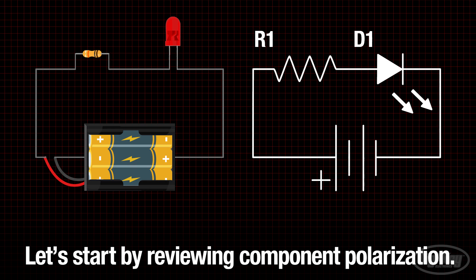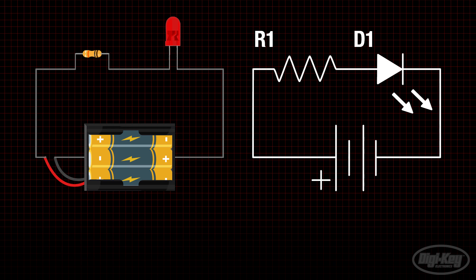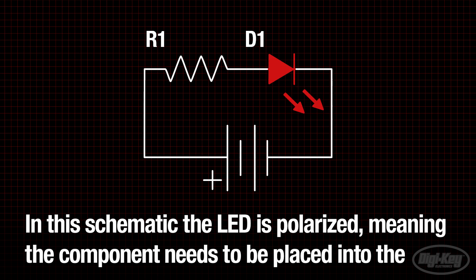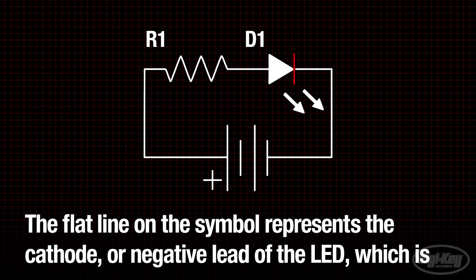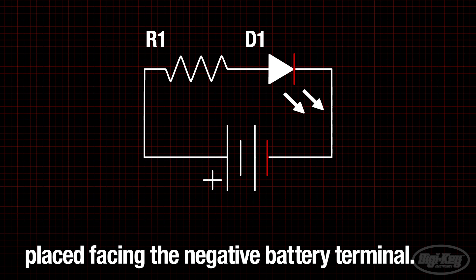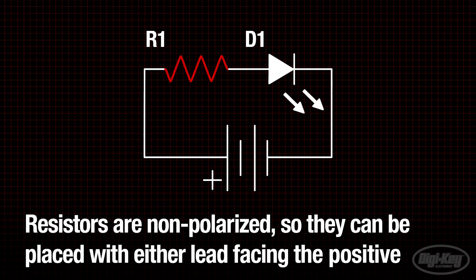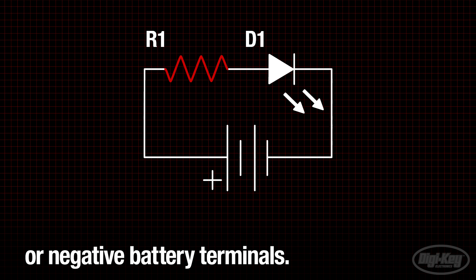Let's start by reviewing component polarization. In this schematic, the LED is polarized, meaning the component needs to be placed into the circuit in a particular direction. The flat line on the symbol represents the cathode, or negative lead of the LED, which is placed facing the negative battery terminal. Resistors are non-polarized, so they can be placed with either lead facing the positive or negative battery terminals.